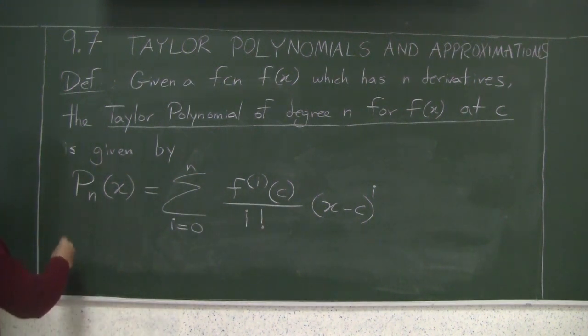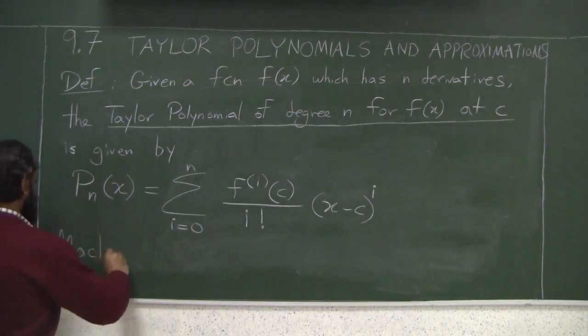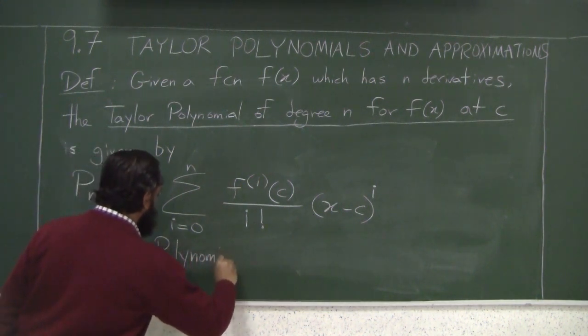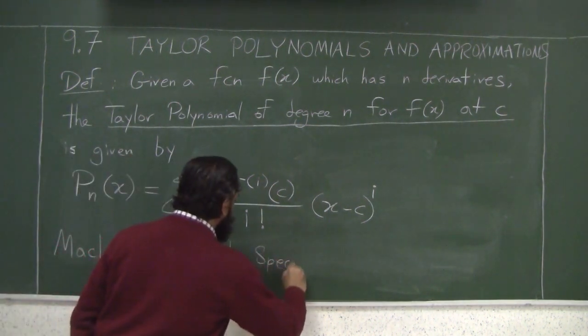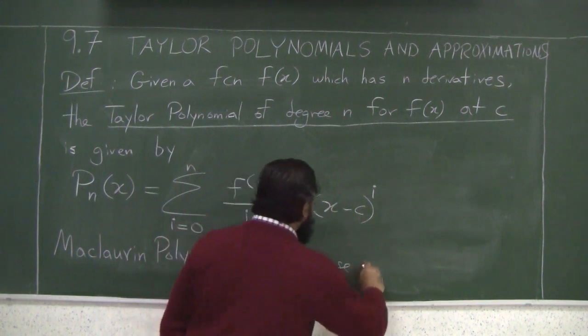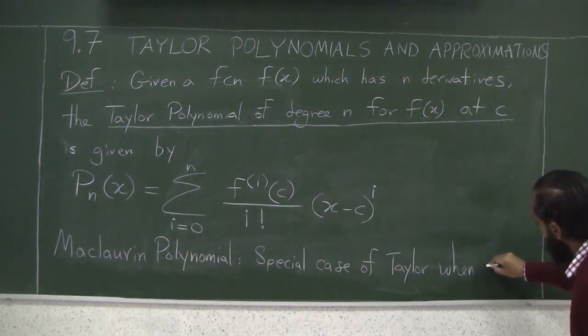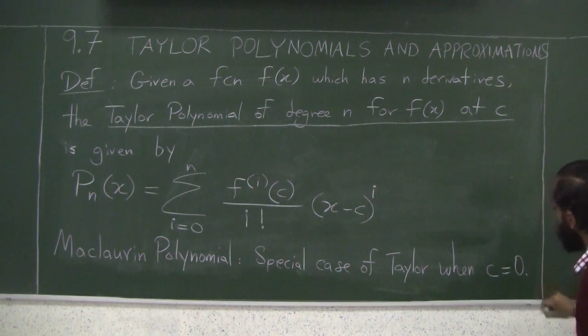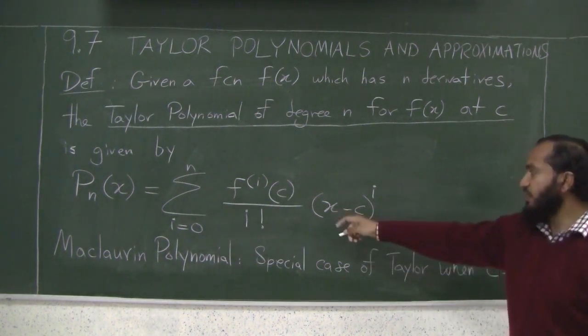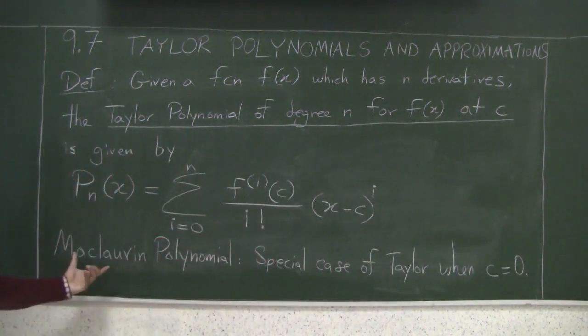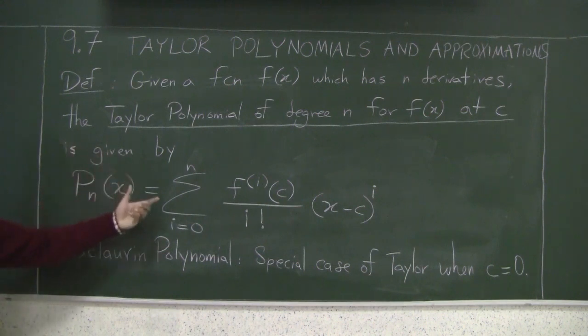One more definition is the Maclaurin polynomial. The Maclaurin polynomial is the special case of Taylor when c equals 0. If you're doing the approximation around c equals 0, it's also a Taylor series for c equals 0. This is because Maclaurin discovered this separately, but he did it only at c equals 0, so it was named after him. Whereas Taylor did it more generally, so the general formulation is called Taylor series and the special case is called Maclaurin series.